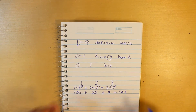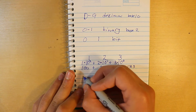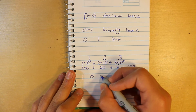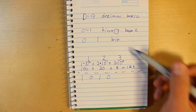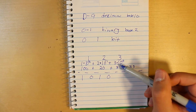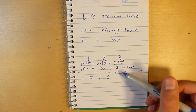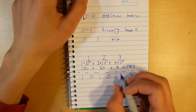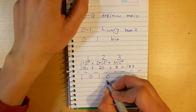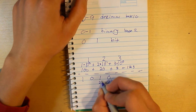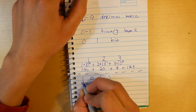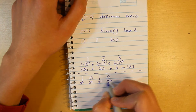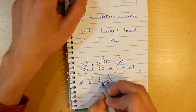Now let's take an example binary number — a short one like 1010. The example up here was base 10 and we used 10, so since this is base 2 we're going to use 2. Just like before: 2 to the zero, 2 to the one, 2 to the two, 2 to the three.